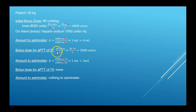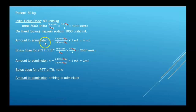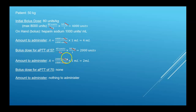For an APTT of 57, we check the protocol — that falls between 54 and 59, so the bolus is 40 units per kilogram. Forty units per kilogram times the 50-kilogram patient equals 2,000 units. D is 2,000, H is 1,000, Q is 1 milliliter — so we administer 2 milliliters.